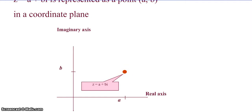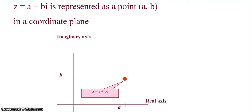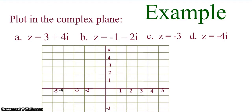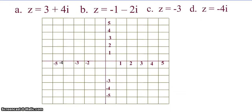That's how we can graph a complex number on our coordinate plane. I want you to pause the video and graph: 3 plus 4i, negative 1 minus 2i, negative 3, and negative 4i. Pause the video and unpause when you're ready to check your work.